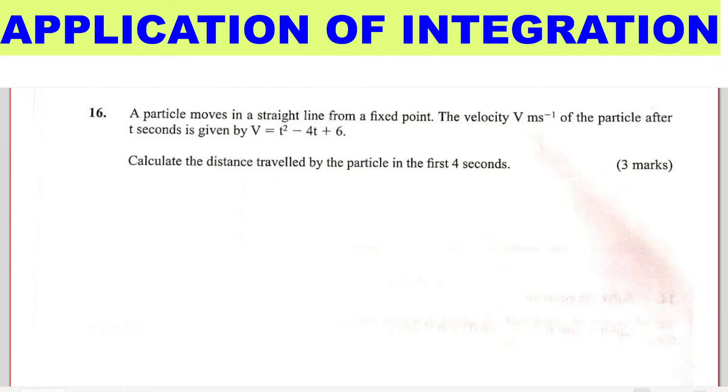Application of integration in kinematics. A particle moves in a straight line from a fixed point. The velocity v meters per second of the particle after t seconds is given by v equals t squared minus 4t plus 6. Calculate the distance traveled by the particle in the first four seconds.